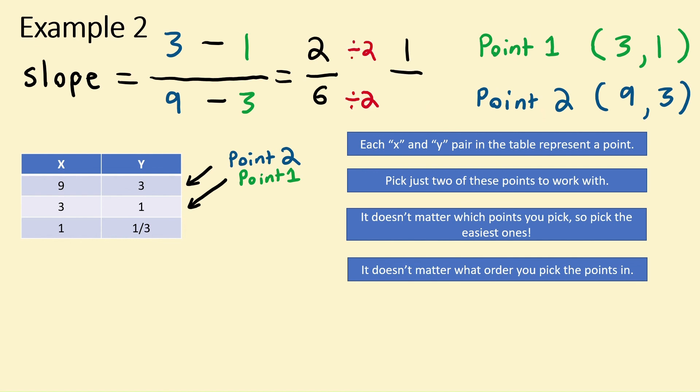2 divided by 2 is 1, over 6 divided by 2, which is 3. Our final simplified fraction is 1 over 3, which means the slope of this table is 1 over 3.